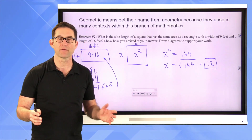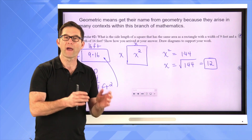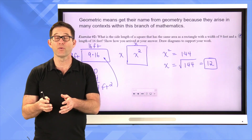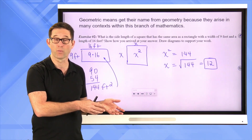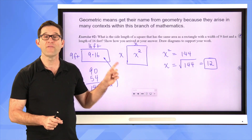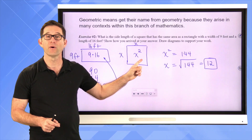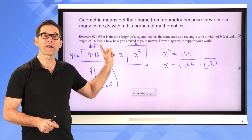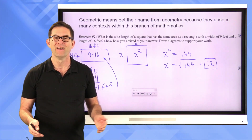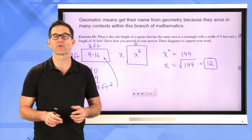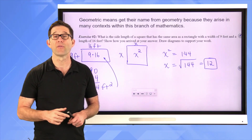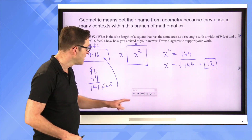A geometric mean is simply a number whose product with itself equals the product of the two numbers you're finding the mean of. Compare that to an arithmetic mean: when you add two numbers and divide by two, you get a number that when added to itself gives you the sum of the two original numbers. When you find a geometric mean, you find a number whose product with itself gives the same product as the two numbers you started with. That's a good way to think about what the geometric mean is, as opposed to the arithmetic mean.